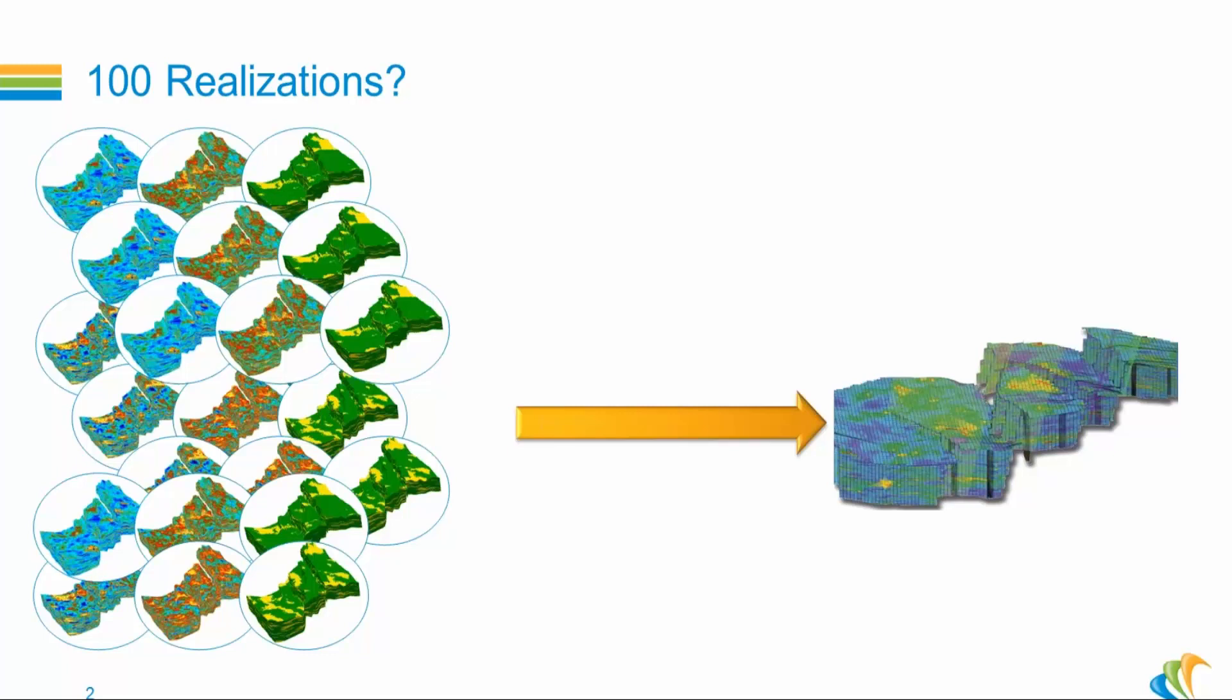You are with your multiple realizations. Of course you cannot go to the reservoir engineer with your hundred models even if they are all plausible. You know you have to make some sort of selection. The question is then what do you base your selection on? You will do some sort of ranking. I will discuss ranking and how to define a good ranking criterion in a few slides. Another question to ask yourself is have I properly captured the uncertainty? I will show a multi-scenario approach to answer this question.